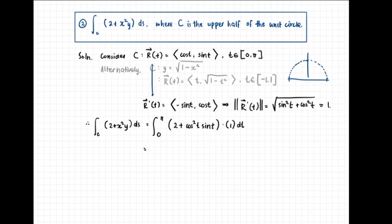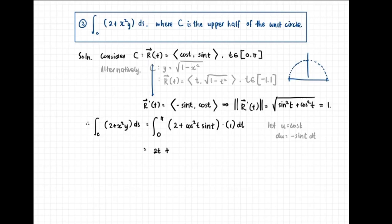The antiderivative of 2 is 2t. For the antiderivative of cosine squared t times sine t, let u equal cosine t, so du equals negative sine t dt. The integrand becomes negative u squared du, whose antiderivative is negative u cubed over 3, which is the negative of cosine cubed t over 3.